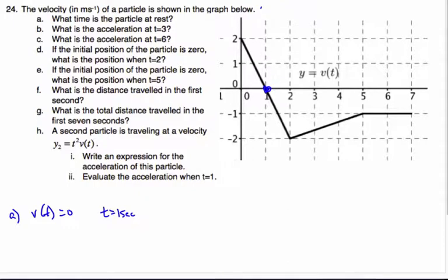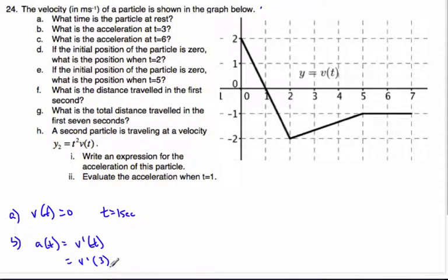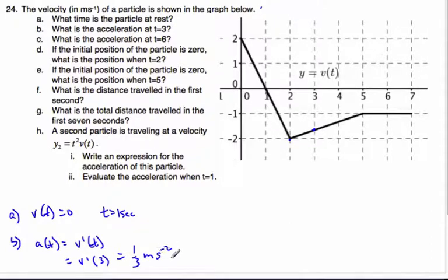The next question asks for the acceleration at t equals three. Acceleration is simply the derivative of velocity, so we want to find the slope at t equals three. It's a straight line that rises by one and runs three to the right, so the slope is one-third. That means the acceleration is one-third meters per second squared.